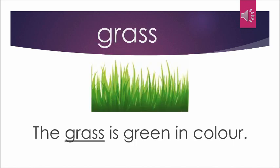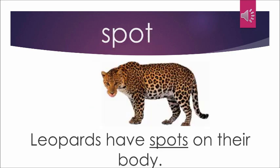Grass is also a type of plant and it is basically grown in the ground. It is green in colour. So the sentence is: The grass is green in colour.